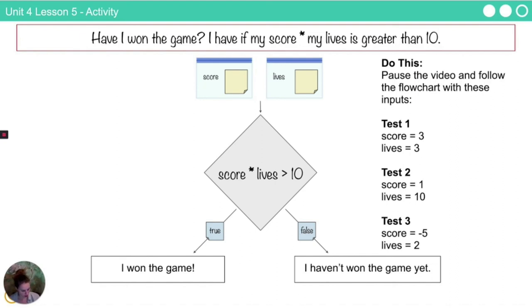Okay. So I'm going to do an example where I put in the values for score and live. So for my score, I've got three. For my lives, I also have three. When I take those values and put them in to my expression, I have score gets the value of three. Lives is also three. Three times three evaluates to nine. Nine is nine greater than 10. Nine greater than 10 is a false statement. Unfortunately for me, I have just evaluated this expression and I need to follow down this path. I haven't won the game yet. Keep trying.